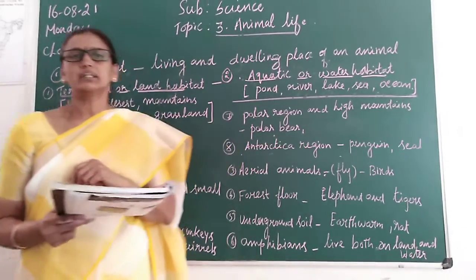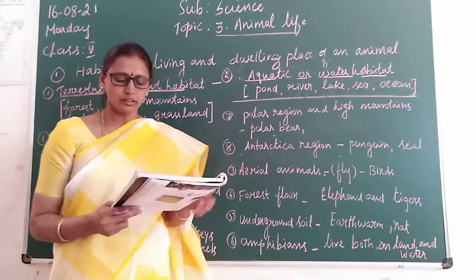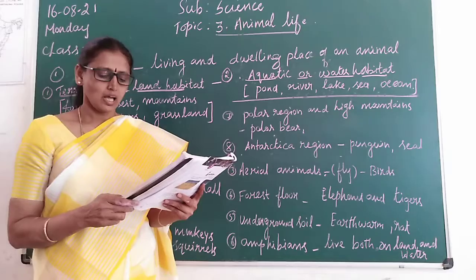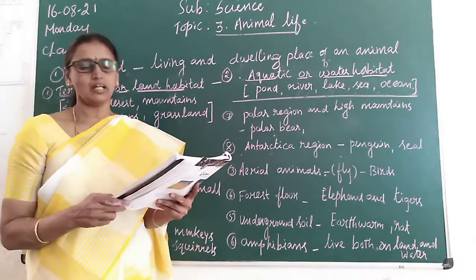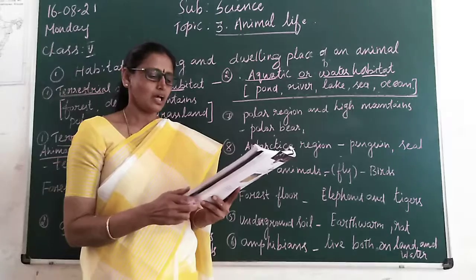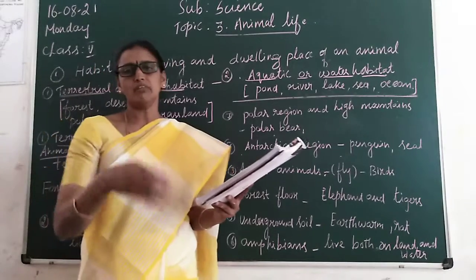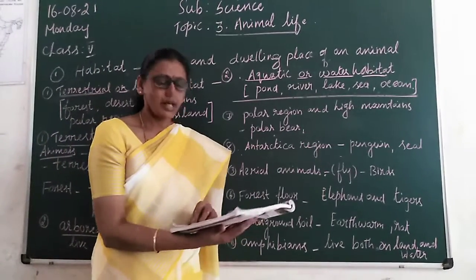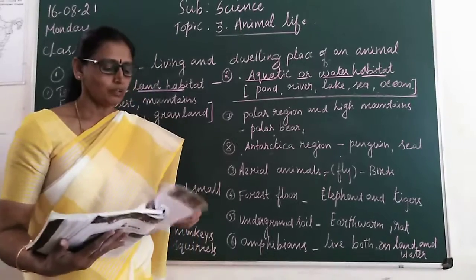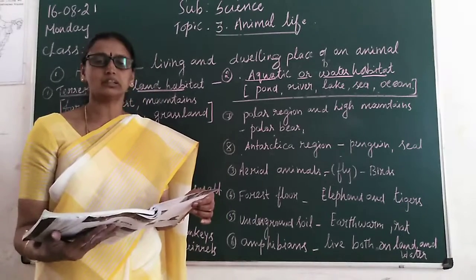Grasslands are homes of animals like deer, zebra, and giraffe. The vegetation helps them to hide from predators. Their body colour camouflages with the surroundings — camouflage means to blend with the surroundings.